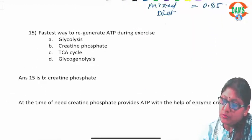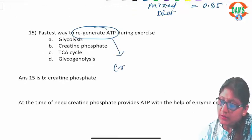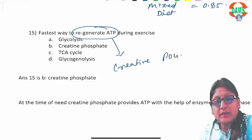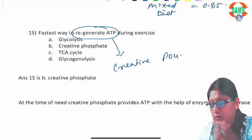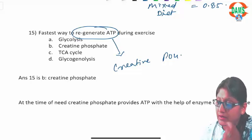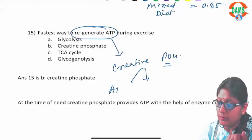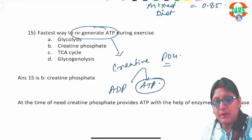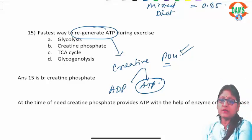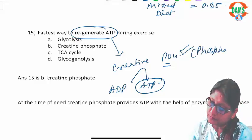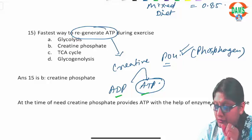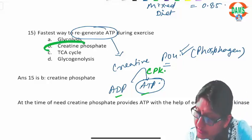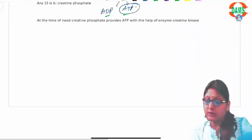Question fifteen: the fastest way to regenerate ATP during exercise is via creatine phosphate, because glycolysis and the TCA cycle take extra time. Once available ATP in the cytosol is used up, creatine phosphate donates its phosphate to ADP to produce ATP instantly. This mechanism, called the phosphagen system, is the earliest source of ATP in exercising muscle. The enzyme responsible is creatine phosphokinase (CPK).